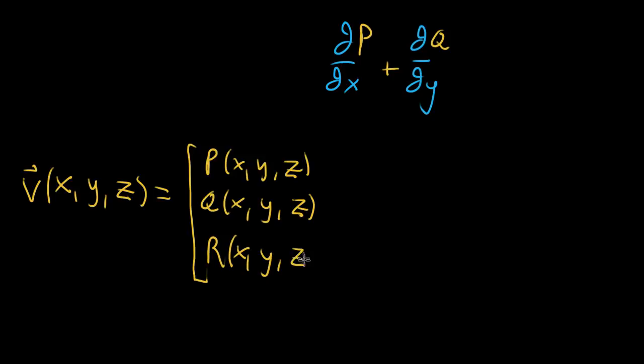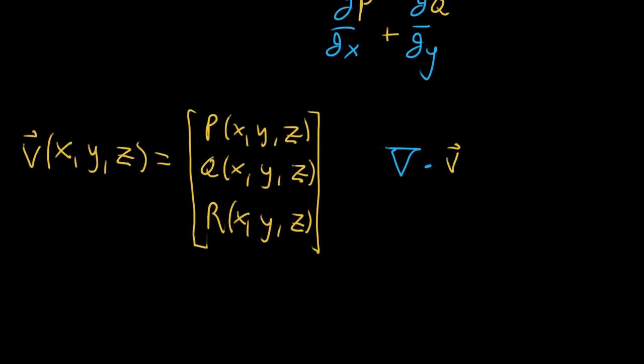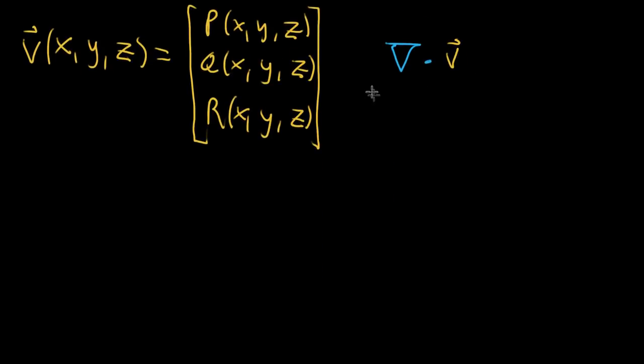And I haven't talked about three dimensional divergence, but if you take this and then you imagine doing your nabla dotted with the vector valued function, it can still make sense. And in this case, that nabla you're thinking of as having three different components. It's gonna be ∂/∂x, and the second component is ∂/∂y, and the last component is ∂/∂z.